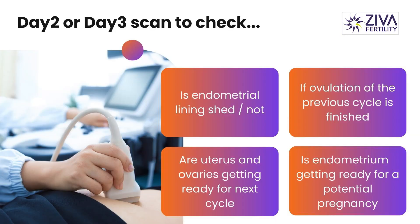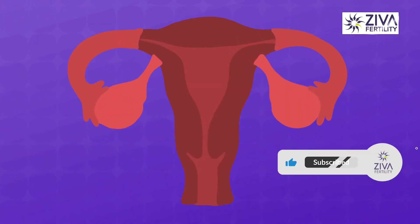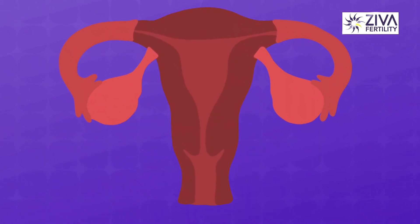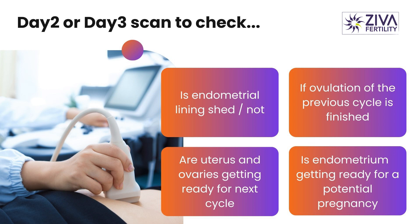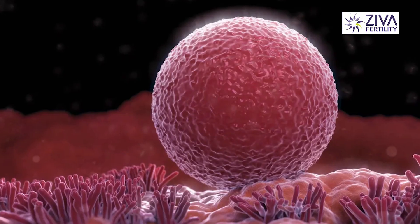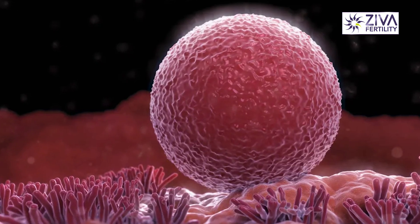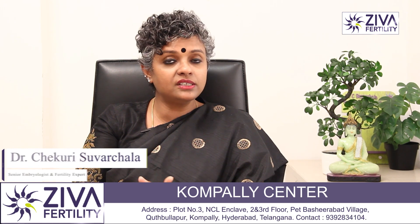Then we talk about the day 2 scan. A day 2 or day 3 scan is an essential scan when your doctor is trying to treat you. These scans are done on these specific days because your endometrium lining has begun to shed, ovulation of the previous cycle is done, and your uterus and ovaries are getting ready for the next cycle. The ovaries are selecting the next batch of eggs, out of which one egg will ovulate, and the endometrium is getting ready for a hopeful potential pregnancy — or if not, for a breakthrough bleeding.